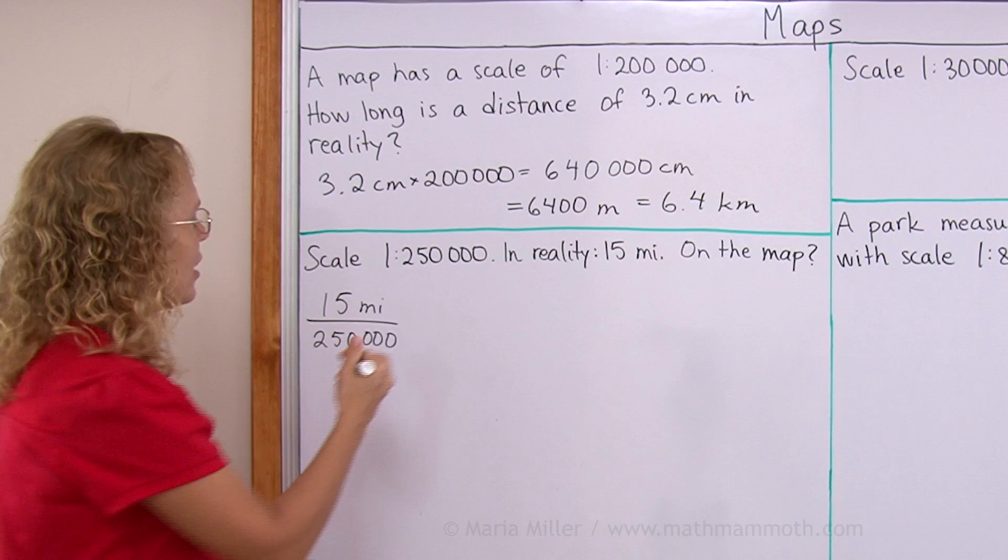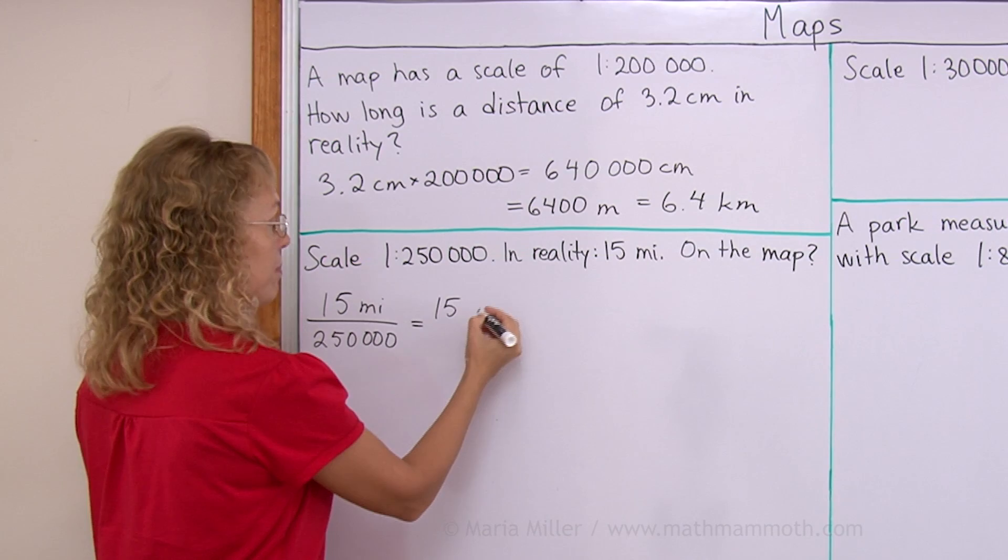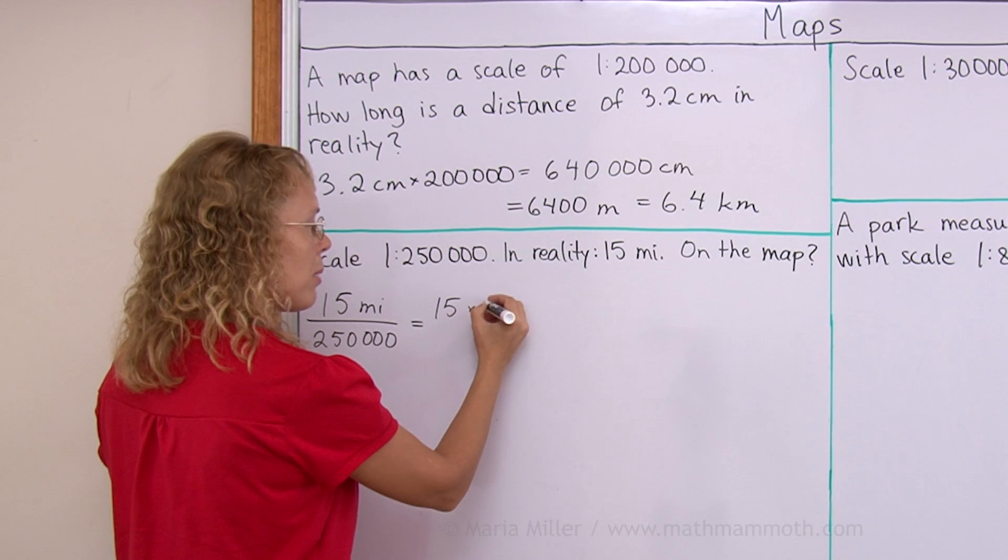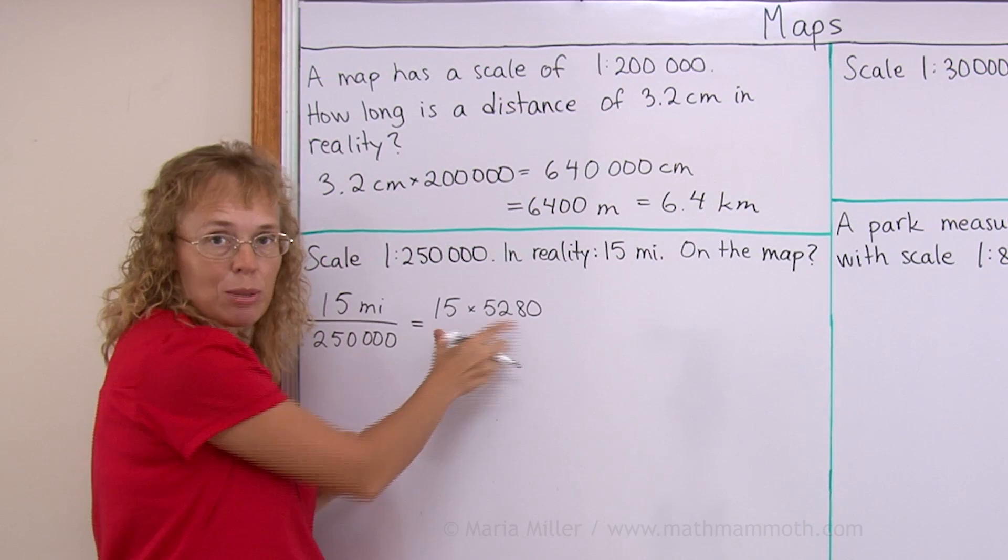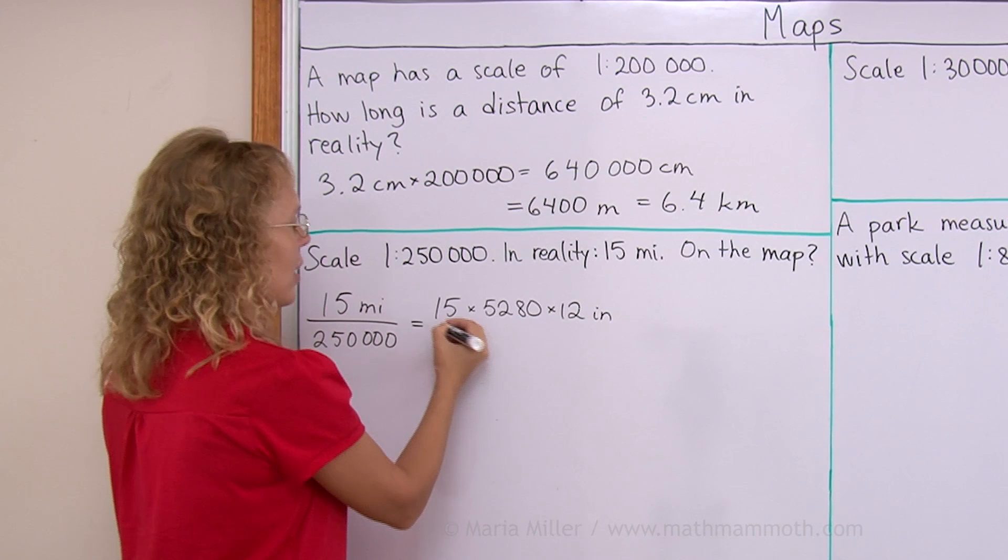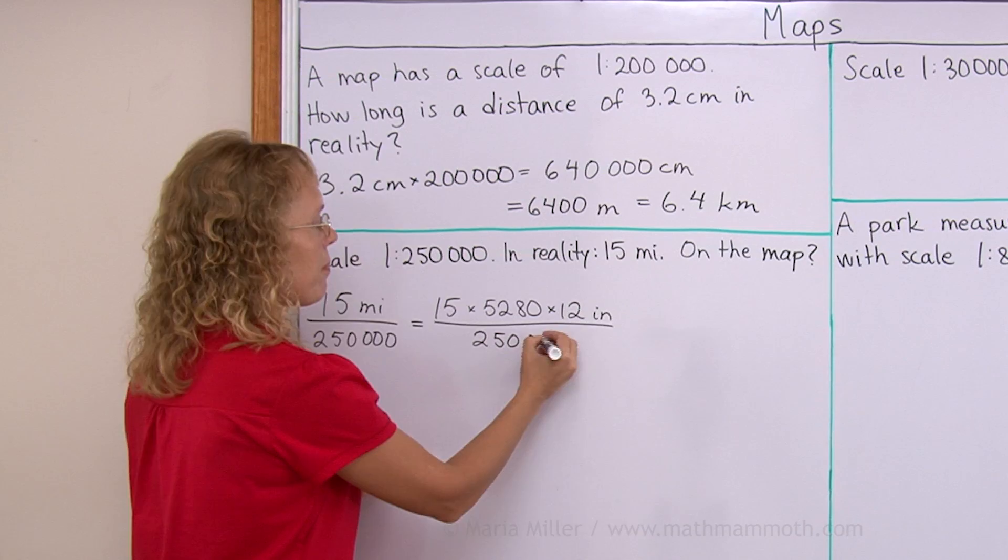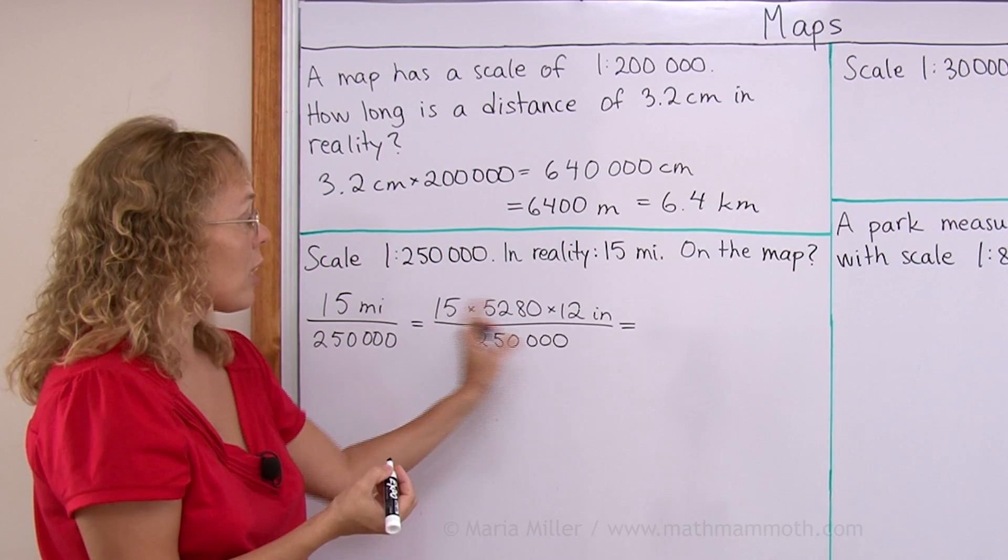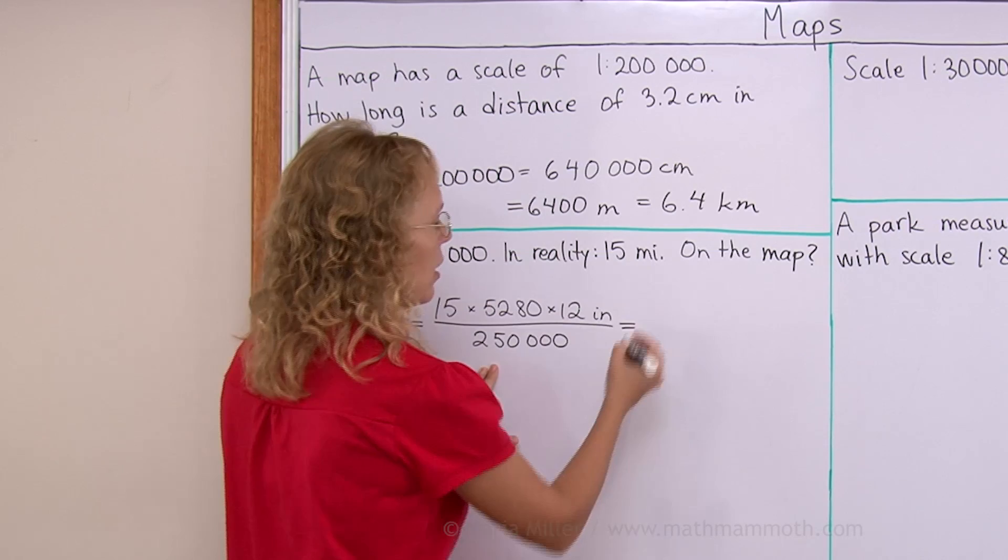So if I do that I will just work with this 15 miles here on top and change that into feet. First of all, if I want to change it into feet I will multiply it by 5,280, right? And this would tell me how many feet it's going to be. And then I will change that into inches. This is however many feet it is. I multiply that times 12 to get how many inches it would be. And now the division by 250,000. And this will now give me the amount in inches. So I would first multiply in a calculator and then divide by this number. And the answer is approximately 3.8 inches.